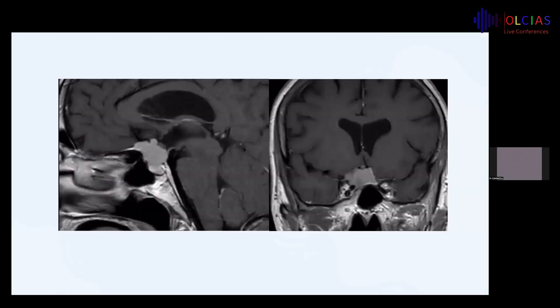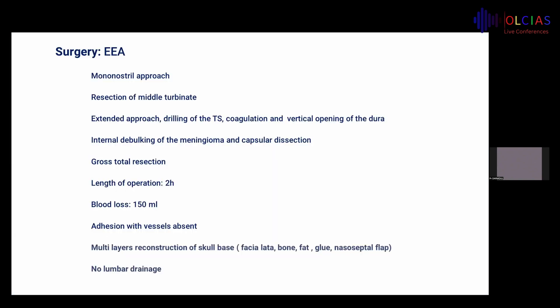The MRI coronal and sagittal views with contrast showed the superior sellae tuberculum meningioma. The patient underwent surgery via the endoscopic endonasal approach by mononostril approach. We resected the middle turbinate and performed an extended approach with drilling of the tuberculum sellae, coagulation, and vertical opening of the dura. We performed internal debulking of the meningioma and capsular dissection, obtaining a gross total resection.